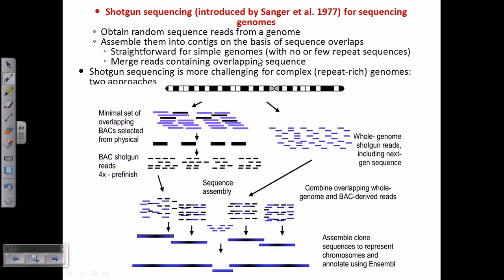The basic idea of Shotgun Sequencing is to obtain random sequence reads from the genome. It is a random sequencing — it is not a kind of sequential sequencing that we have seen in the case of Chromosomal Walking or in the case of Sanger Sequencing.